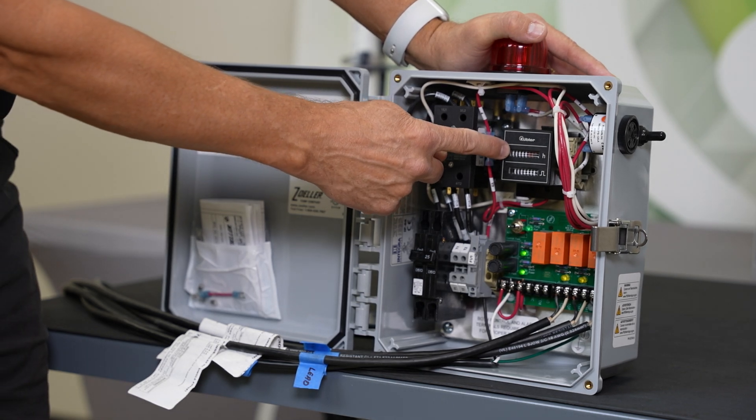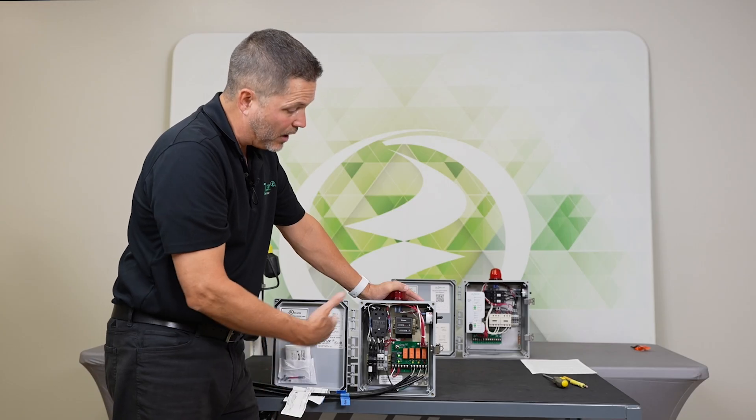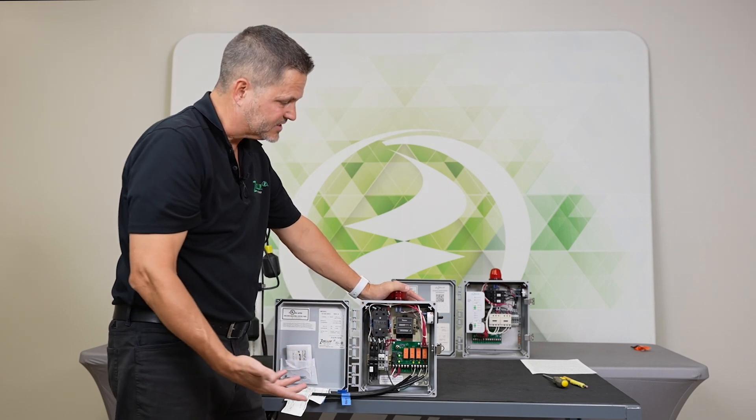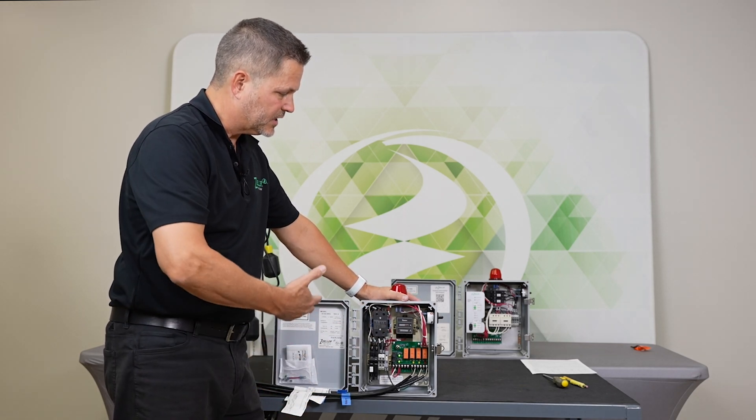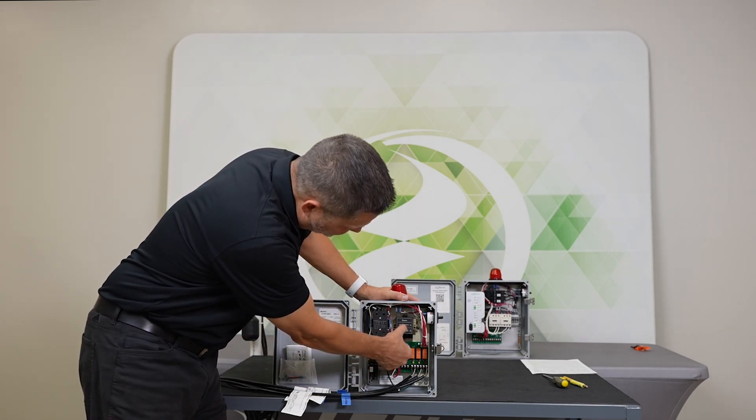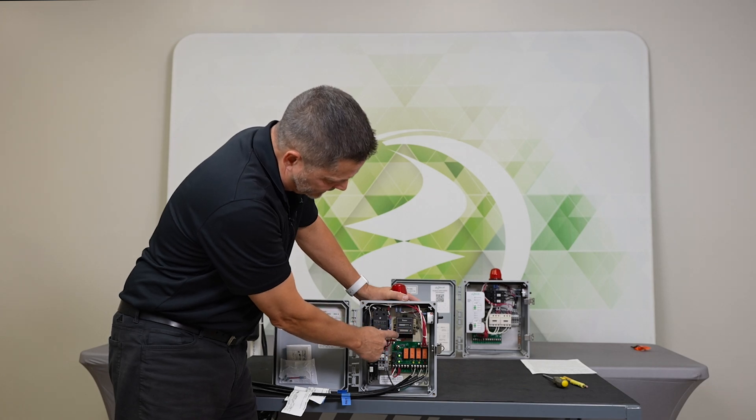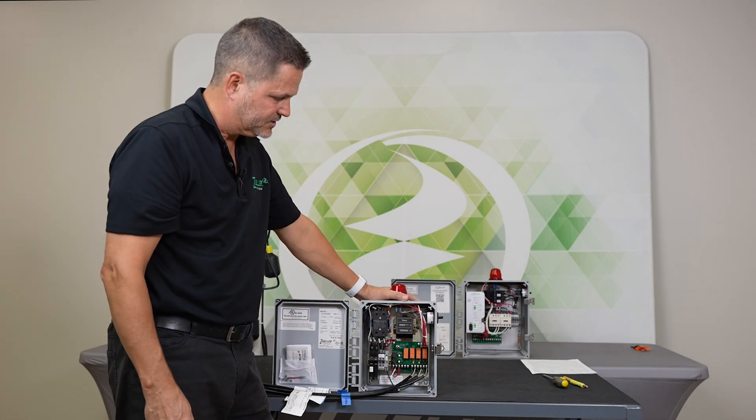And what this box has is an hour meter and a cycle counter. The hour meter is also known as an elapsed time meter. So it'll count pump minutes or hours on your counter here, like an odometer. Same thing with your cycle count. It'll increment each time the pump runs.